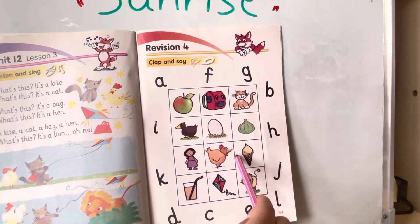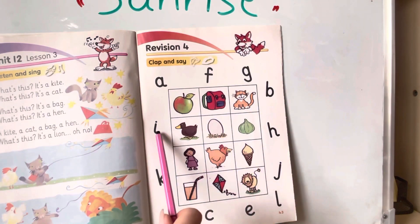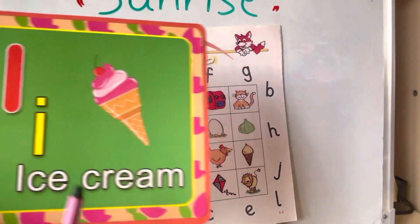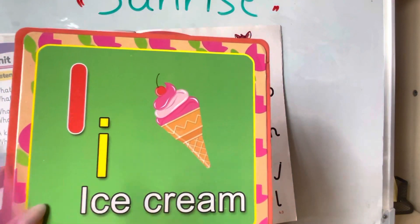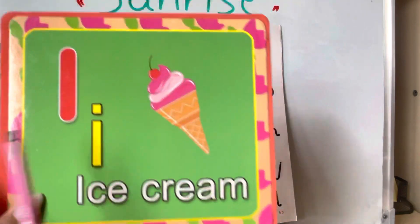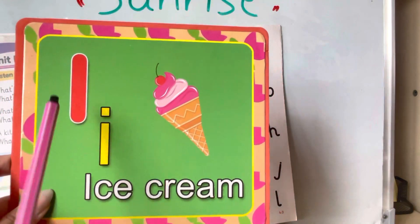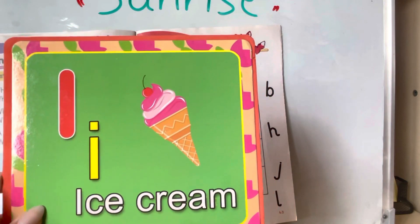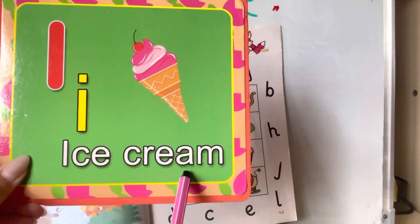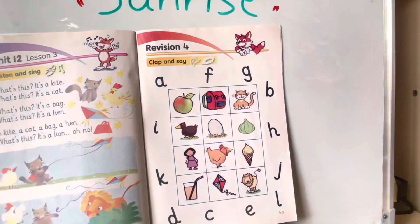Here we have an ice cream. Ice cream starts with the letter I. Can you say ice cream? We have uppercase I and then lowercase i, or capital I and small i. Ice cream. Great.